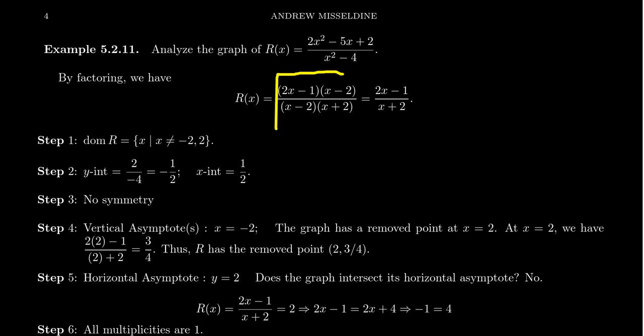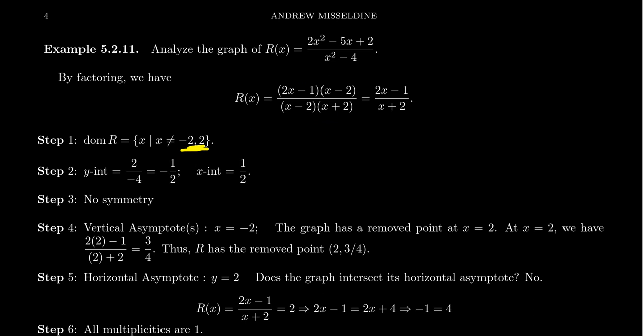Now, looking at the fraction, what makes the denominator go to 0? We get x equals 2 and x equals negative 2 — these are the forbidden values from the domain. Next, look to see if there are any common factors in the numerator and denominator. There's an x minus 2 on top and bottom that cancels out, so this rational function simplifies to 2x minus 1 over x plus 2.